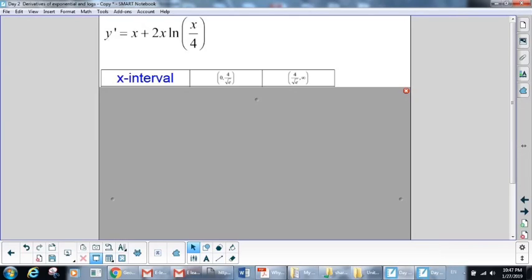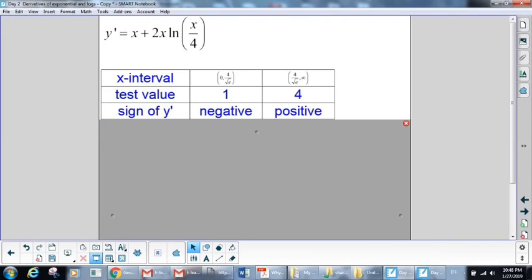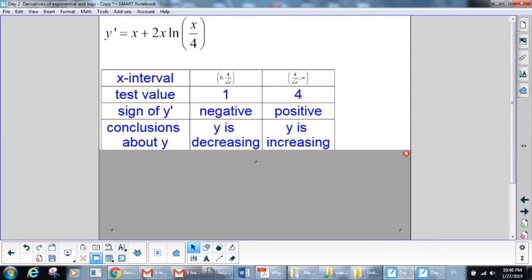Now we need to test those in our intervals to find out where our derivative is positive and negative. So as we think about those, when we try our test values, this might look very familiar to you. We already tested these earlier in the lesson. We knew if we have a test value of 1, our derivative is going to be negative. And if we have a test value of 4, that's going to give us a positive answer. Since we know we have a negative and a positive, we know that tells us that y is decreasing on our interval from 0 to 4/√e, and increasing on our interval from 4/√e to infinity.